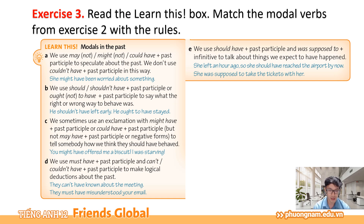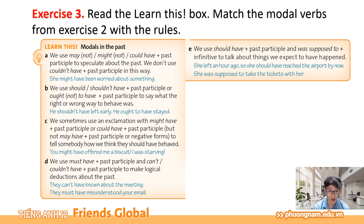Rule E: We use should have plus past participle and were supposed to plus infinitive to talk about things we expect to have happened. Chúng ta sẽ dùng should have cùng với quá khứ phân từ hoặc là were supposed to cùng với động từ nguyên mẫu để nói về những thứ chúng ta cho rằng đáng lẽ đã xảy ra. Ví dụ: She left an hour ago, so she should have reached by now. She was supposed to take the tickets with her — Cô ấy đã rời một tiếng trước rồi, đáng lẽ ra cô ấy đã nên đến nơi. Cô ấy đáng lẽ ra nên cầm theo những tấm vé.